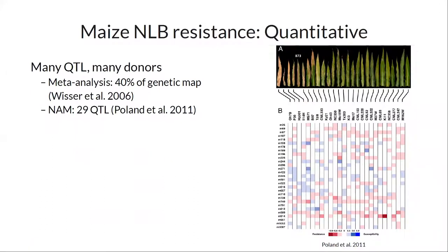Obviously four R genes is not the entirety of what we know about resistance. In terms of quantitative resistance, it is a spectrum. There are lots of QTLs and lots of diversity for resistance. This is an image from Jesse Polin's paper on NLB resistance in the maize NAM population — you can see the range of natural diversity in terms of NLB resistance. Randy Weiser did a meta-analysis from a few different mapping studies, and NLB QTLs from five mapping studies covered 40% of the genetic map. Jessica found 29 QTLs.